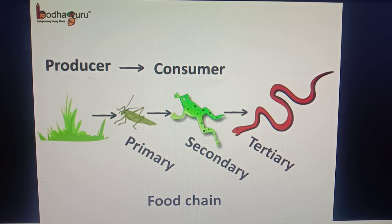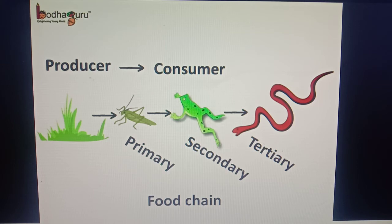And as we saw, the grasshopper is the primary consumer. Sometimes, other animals also eat the secondary consumers. Like a snake eats the frog. Hence, we can say the snakes are the tertiary consumers.